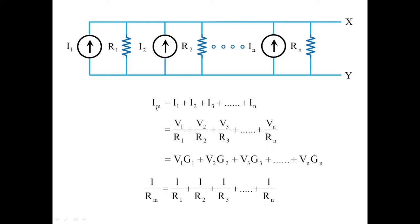Once Im is obtained, I can also obtain the value of Gm, which is the reciprocal of the parallel combination of resistors. Since all resistors are arranged in parallel: 1/R_parallel equals 1/R1 plus 1/R2 so on till 1/Rn. So 1/Rm equals Gm, which means Gm equals G1 plus G2 plus so on till Gn. This is the theoretical proof we can analyze and apply to given problems.